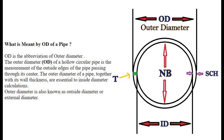First we will know about what is OD of a pipe. OD is the abbreviation of outer diameter. The outside diameter of a hollow circular pipe is the measurement of the outside edges of the pipe passing through its center, as shown in the image.